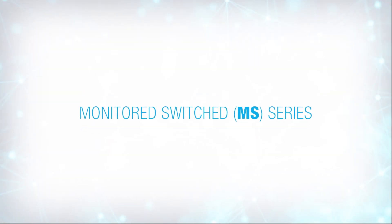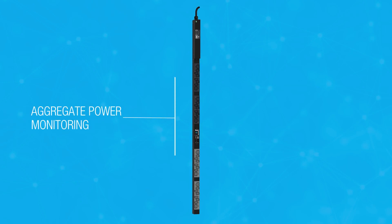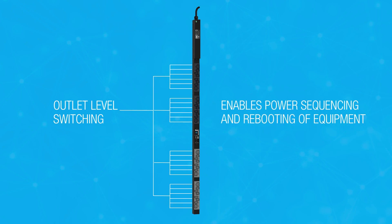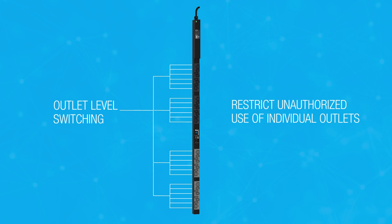Monitored and switched PDUs provide power monitoring on an aggregate level, but also provide outlet level switching. That is, you can remotely switch each outlet off or on as needed. This enables you to properly sequence the powering on and rebooting of your equipment. It also provides security for your data center by restricting unauthorized switching of individual outlets.